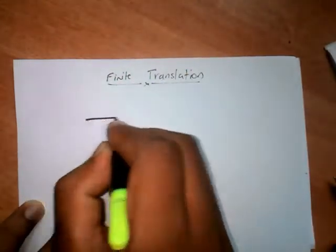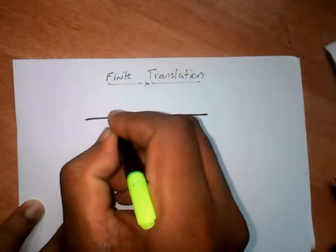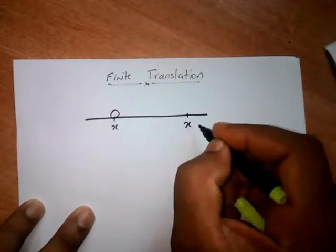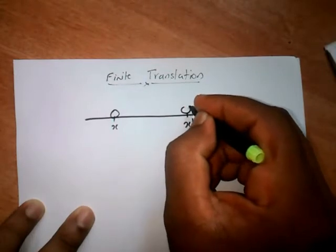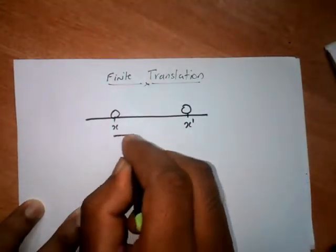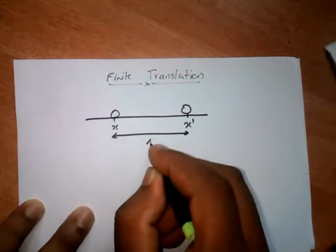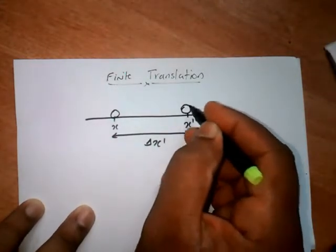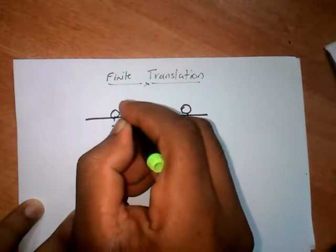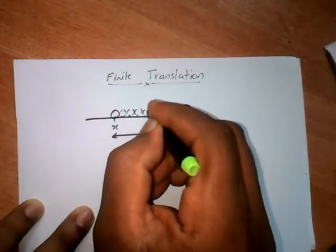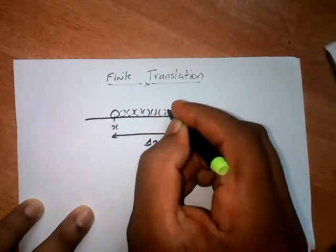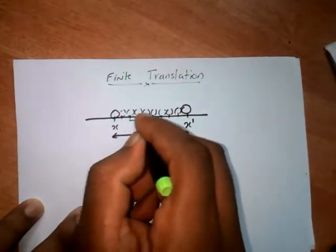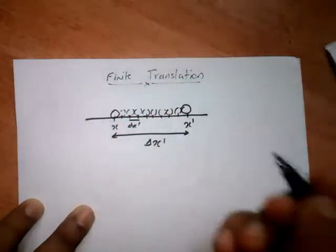Finite translation means: let a particle be placed at a point x, and this particle shifts to another point x' at a finite distance delta x'. Actually, this shift has happened by the contribution of infinitesimal translations — this small distance dx' is the infinitesimal translation.